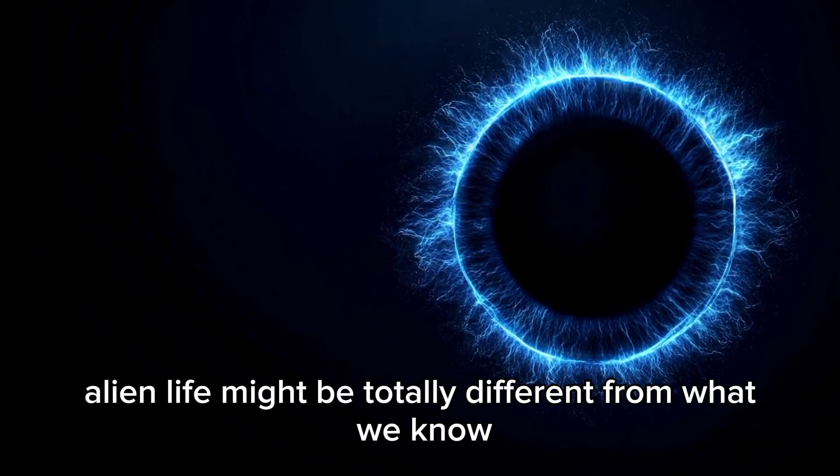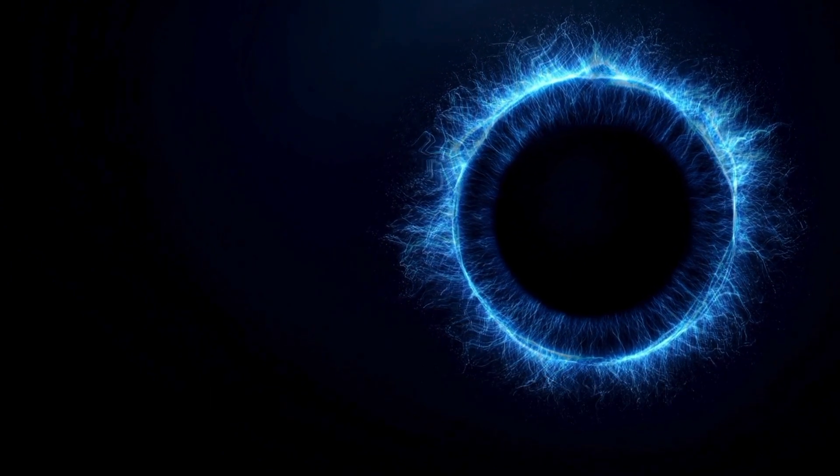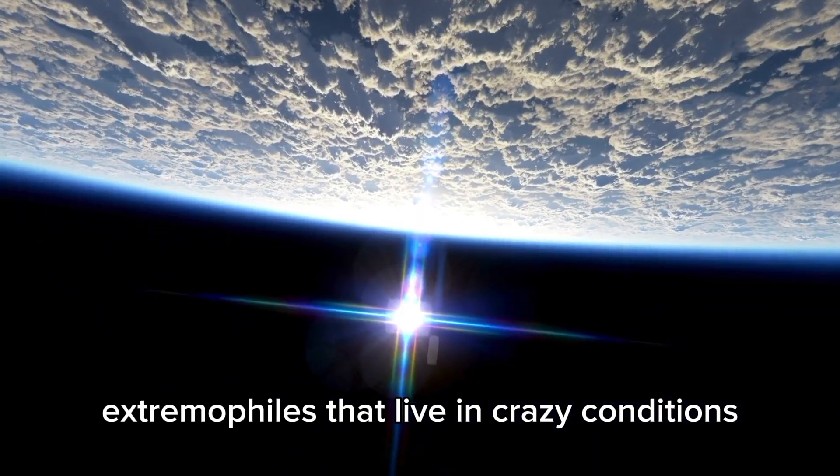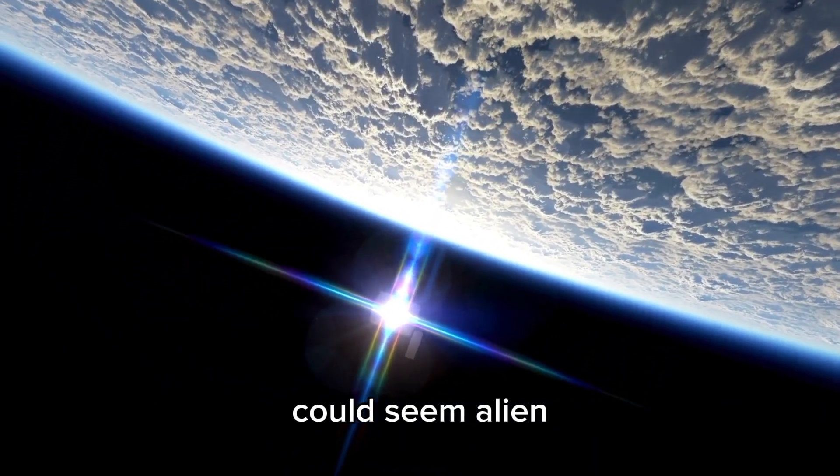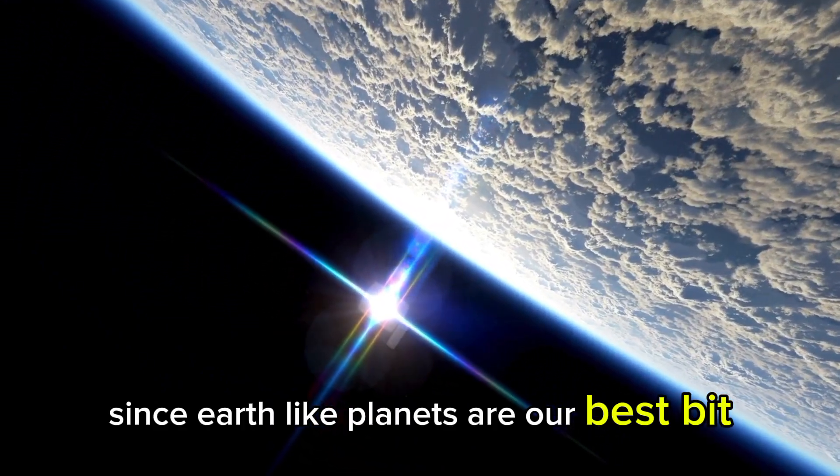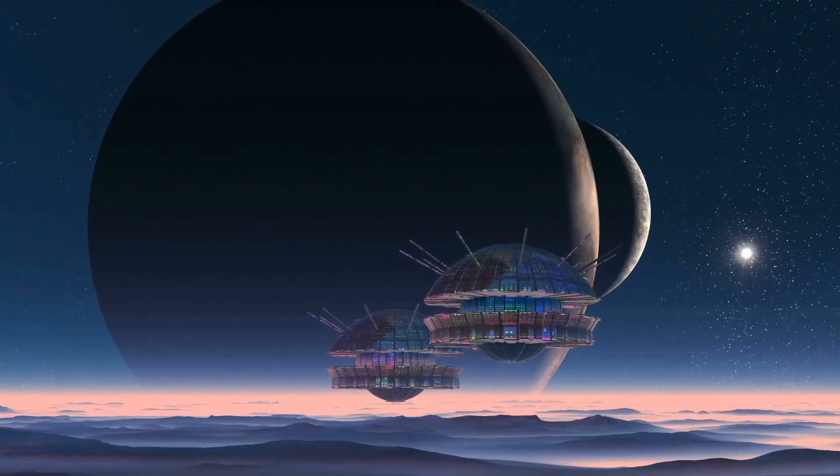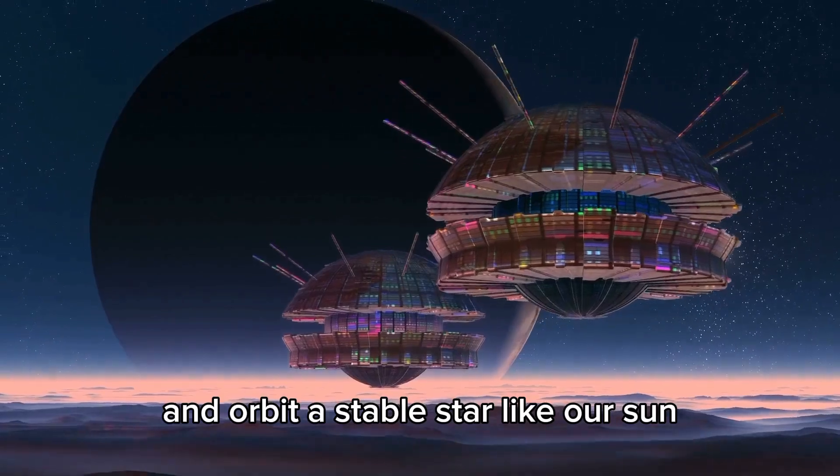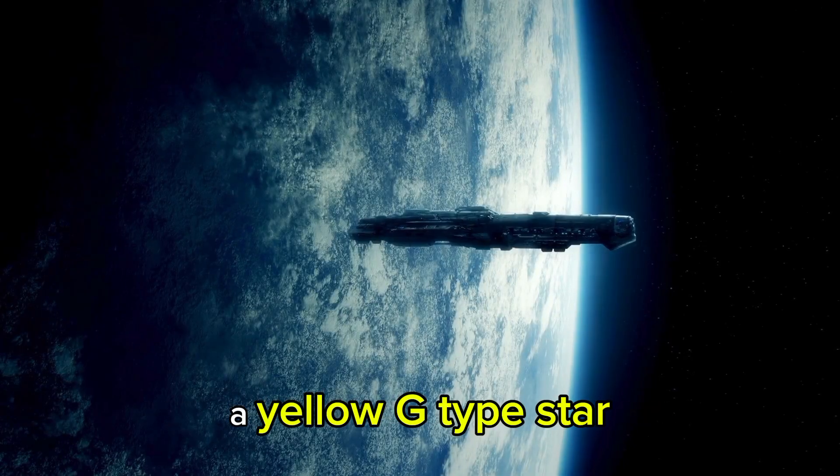Of course, alien life might be totally different from what we know. Even weird creatures here on Earth, extremophiles that live in crazy conditions, could seem alien. Since Earth-like planets are our best bet, we should focus on those. They need to have temperatures where liquid water can exist and orbit a stable star like our sun, a yellow G-type star. But red dwarf stars are more common.